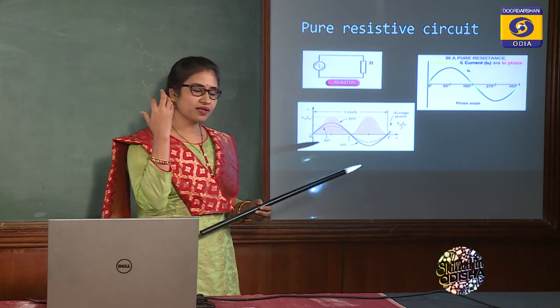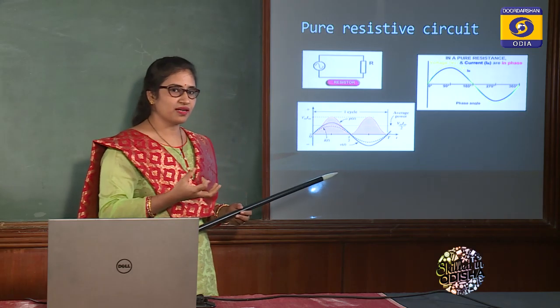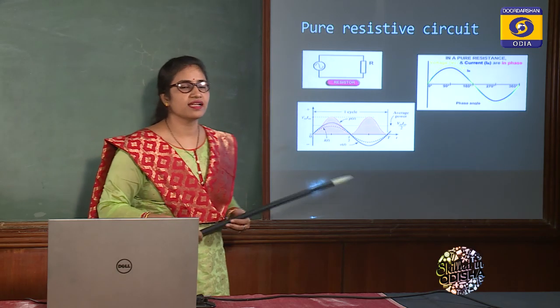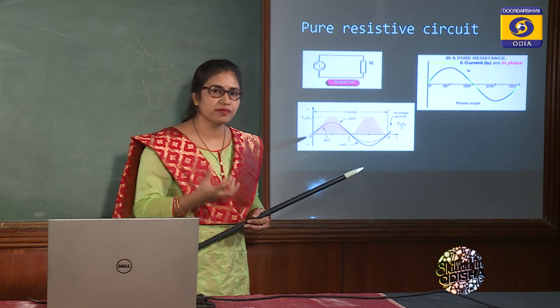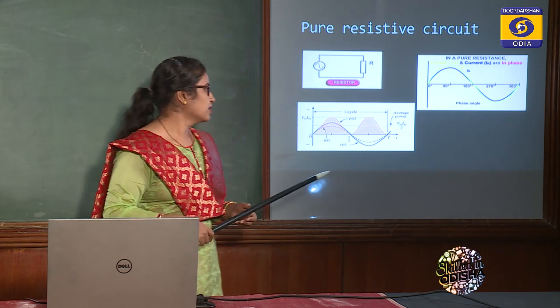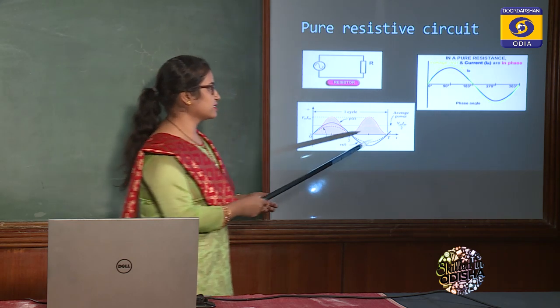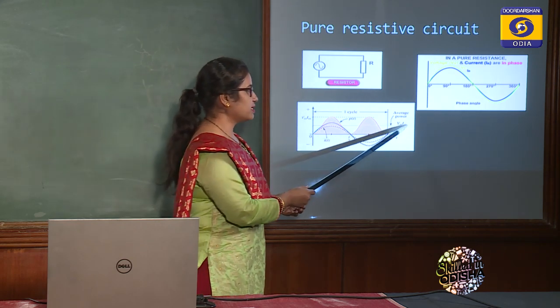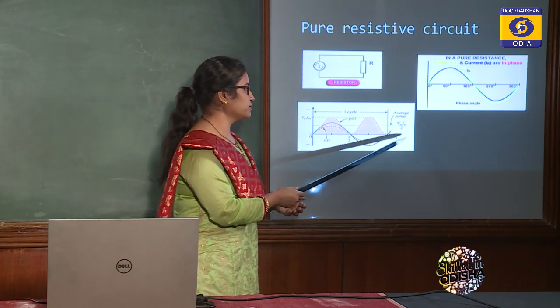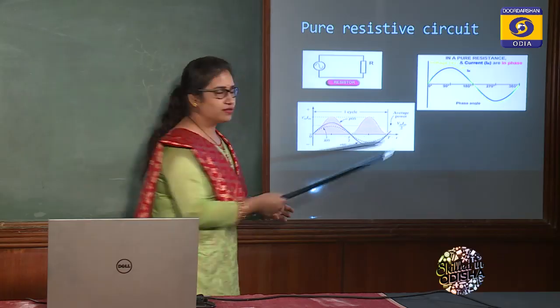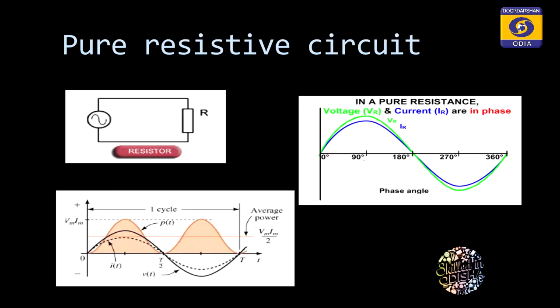That is the useful power — we call it active power. In a resistive circuit, average power can be calculated and it is given by Vm·Im/2, and also by I²R.